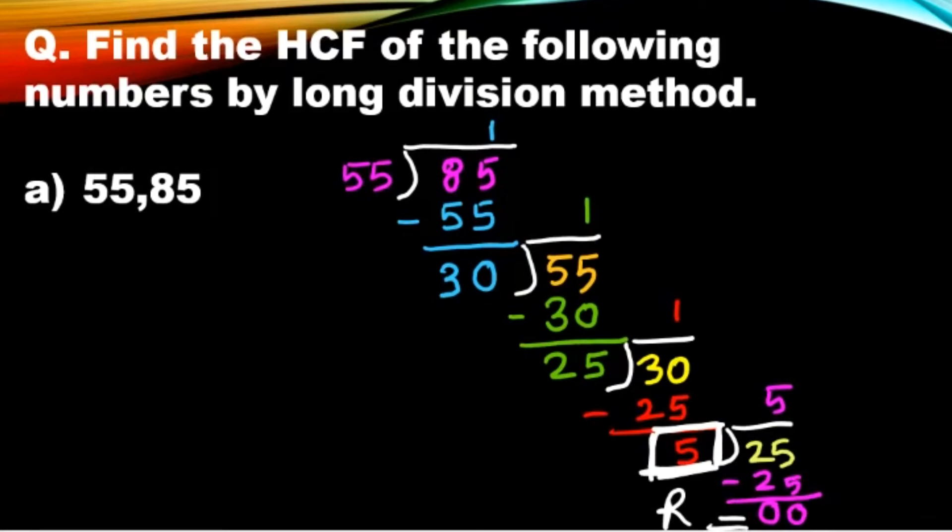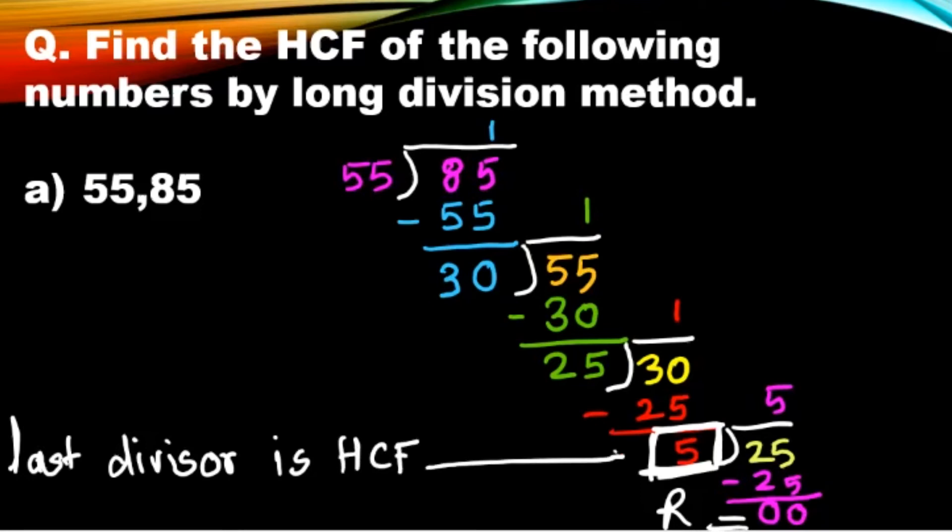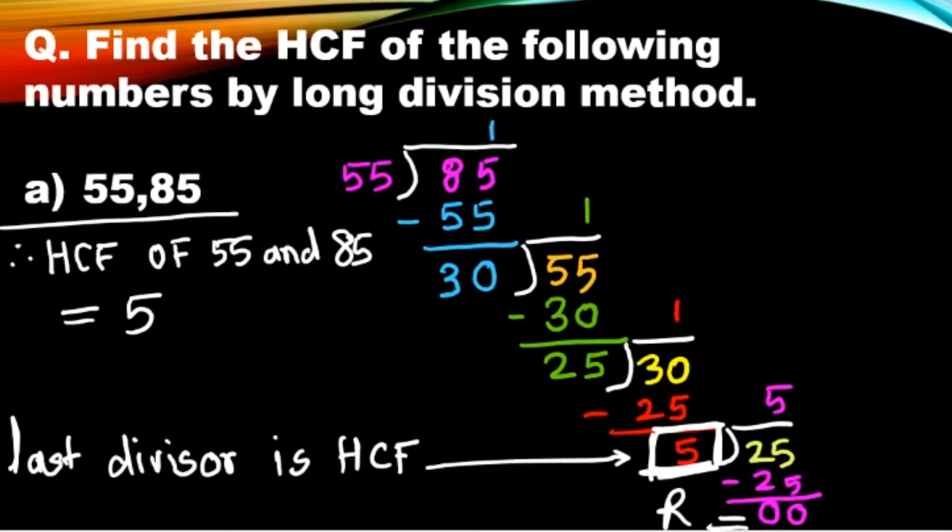And here we have to focus on last divisor, because last divisor is the HCF. That means the HCF of 55 and 85 is 5 by long division method. So let us revise the concept, children. We have to do here the long division.